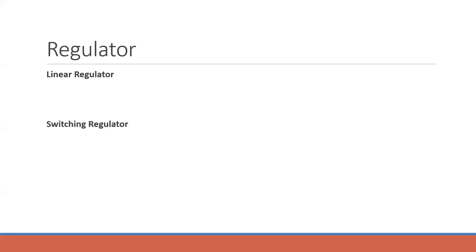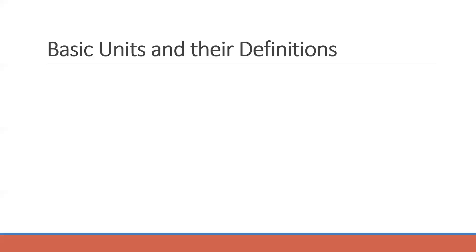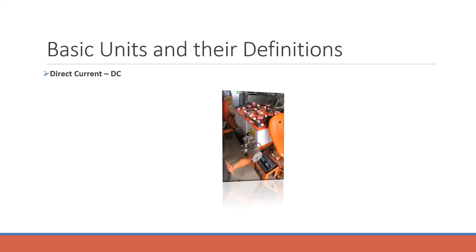Moving towards the basic units of passive and active components — their units, measurements, and definitions. These are the keywords used in electronics. The first unit is direct current (DC), referred to as the flow of electrons in only one direction.